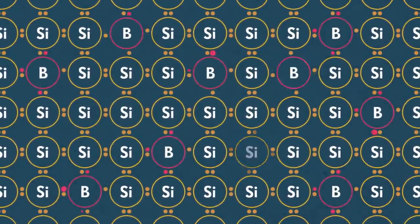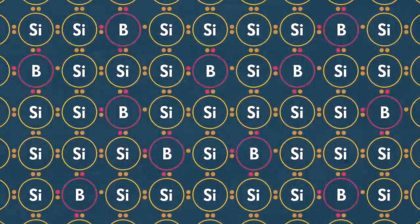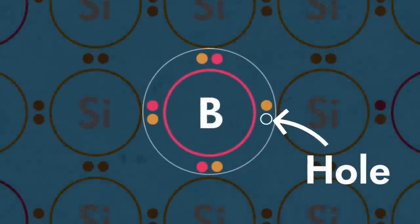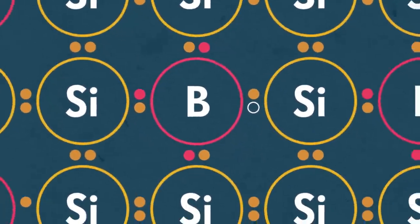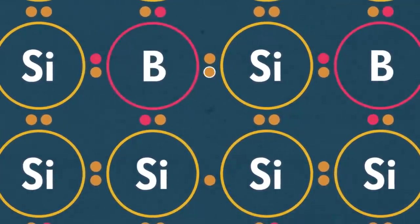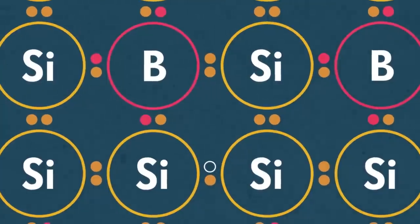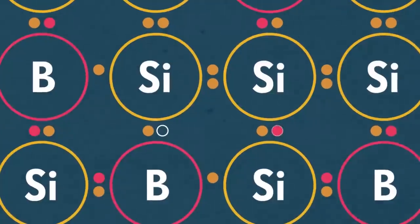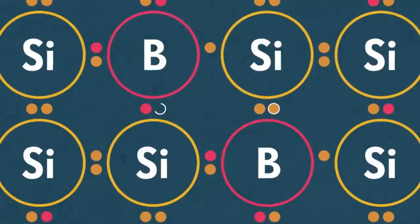Alternatively, we can switch out silicon atoms for atoms that have one fewer electron in their outer shell, like boron. When you do that, you have these incomplete shells in the lattice. What you find is that nearby electrons jump into those holes, and when they do that, they leave a hole behind themselves. That hole will be filled by a neighboring electron, and then that hole will be filled by a neighboring electron, and so the hole moves around. You can actually model the hole like it's a particle — like it's a positively charged charge carrier. So when you dope silicon with boron, you create what's called a P-type semiconductor, because the charge carriers are positively charged.